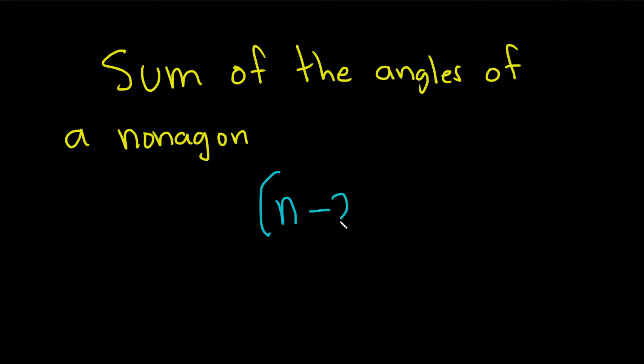It's n minus 2, and that's multiplied by 180 degrees. So a nonagon has 9 sides.